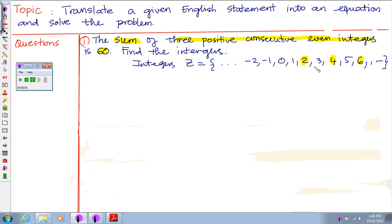Let me give you an example of positive consecutive even integers: 2, 4, and 6. They are positive consecutive, meaning they're next to each other and they are even.